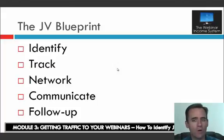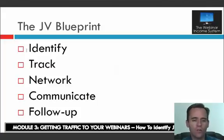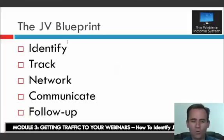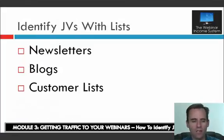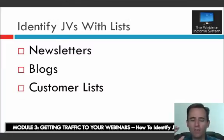I'm going to repeat this several times across modules because I want this ingrained in your mind. You want to first identify, then track, then network with your JVs, then communicate and follow up. That's the blueprint. We're going to talk specifically about the identify step right now — identifying JVs with email lists, large or small.